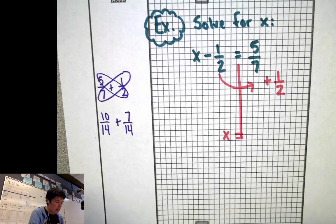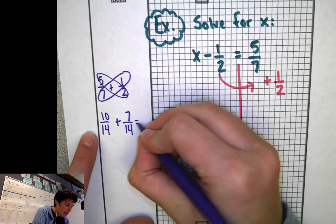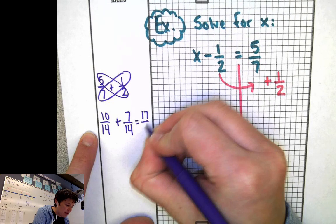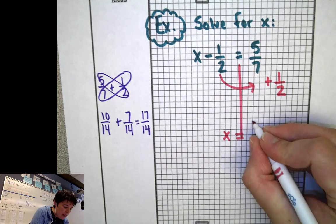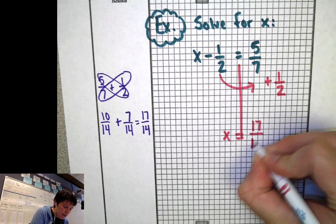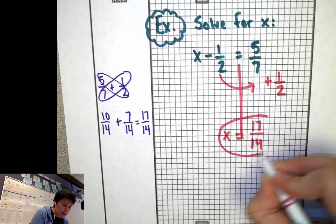Now we have common denominators, so we can. 10 plus seven is 17. So our answer is 17/14. And what I can do now is I can say, okay, x equals 17/14. And if I want, this could be my answer. I could stop right there.